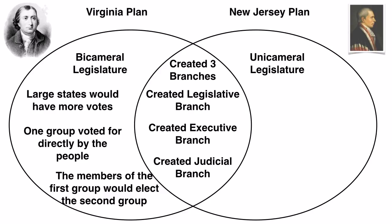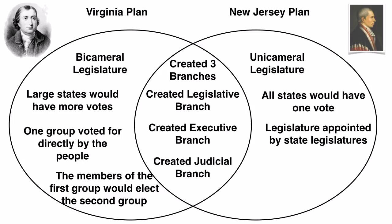New Jersey had a different idea. They wanted a unicameral legislature — one group of people who made the laws. In this legislature, all states would have one vote: very simple, very clear, and all states would be equal — not all people, all states. This legislature would be appointed by the state legislatures, meaning state governments would decide who would represent them in the national legislature. No group would be voted for directly by the people, and this is a big difference between the Virginia and New Jersey plans.